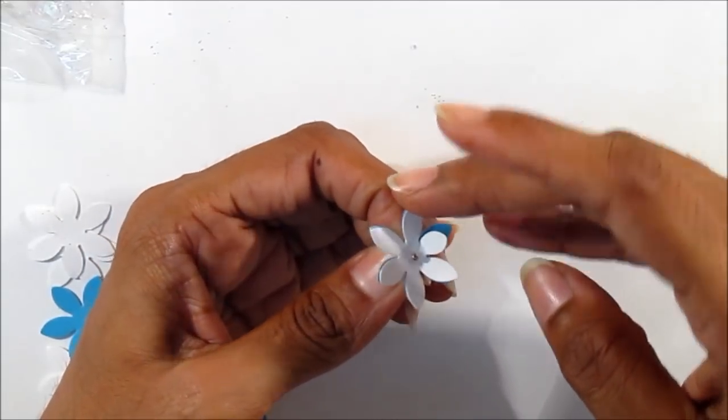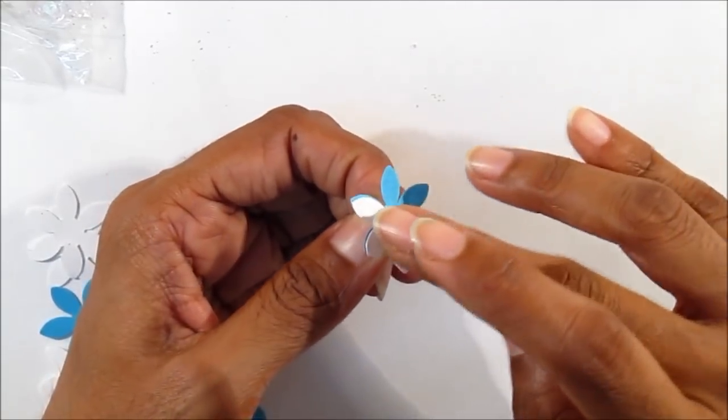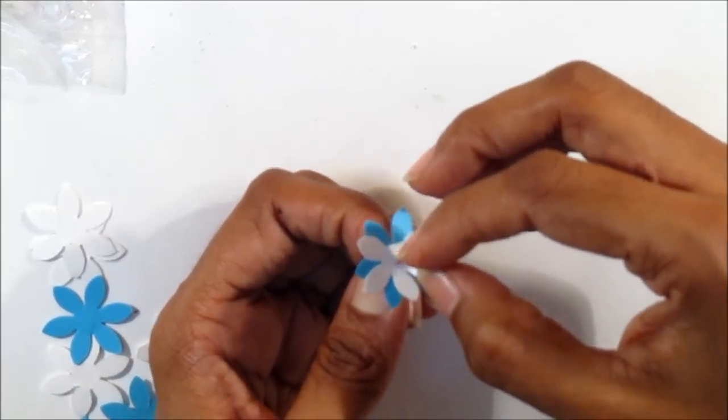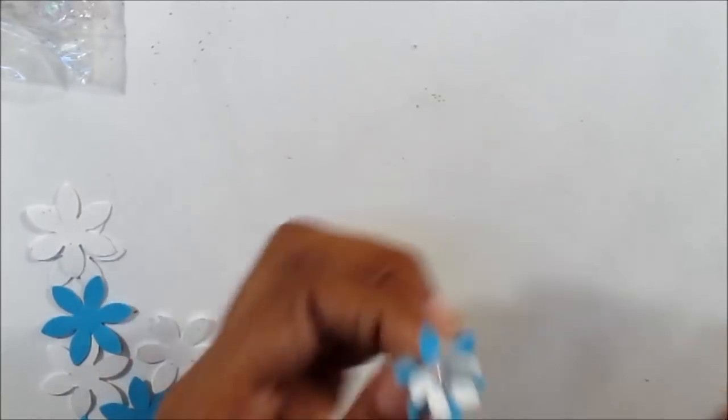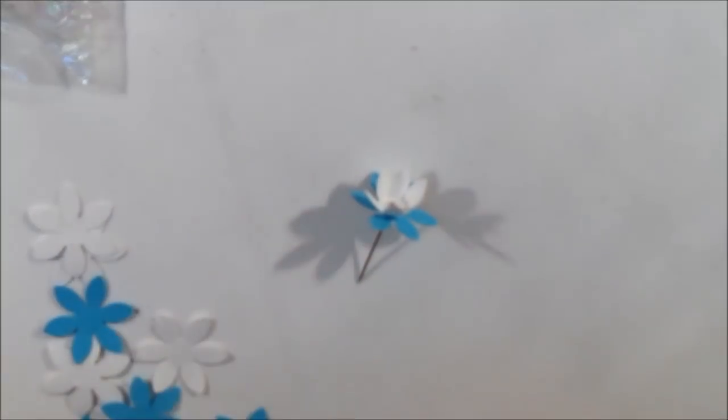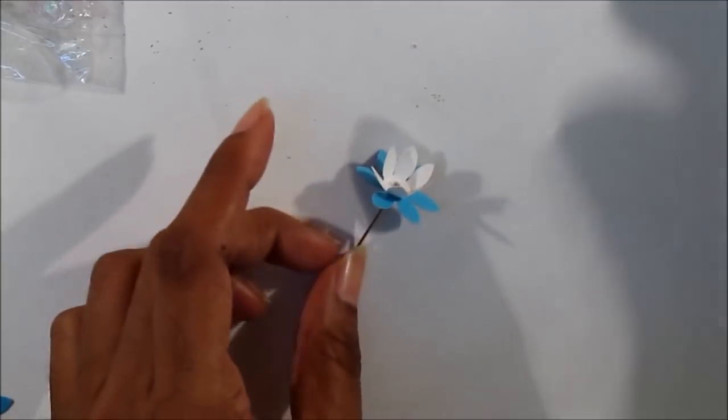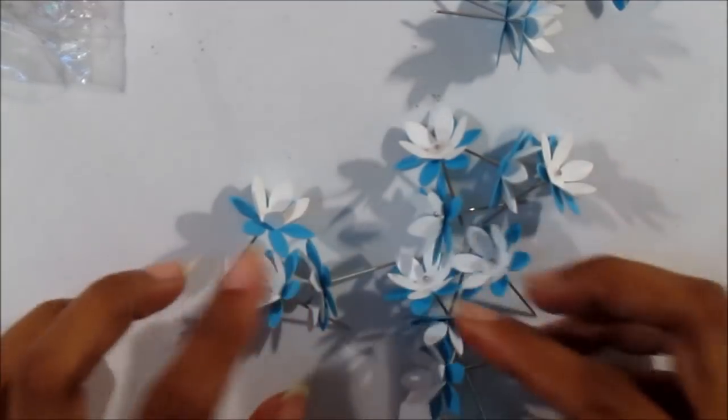After that, you would want to gently pull the petals upwards so that it gives a 3D look and the blue from underneath shows through. That's your flower. You would want to make quite a few of these depending on the size of your thermocol ball.